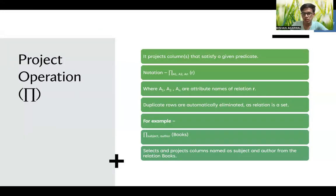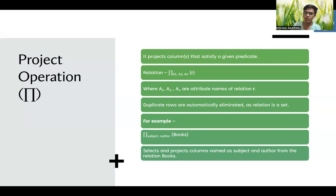Next is the project operation, denoted by pi (π). It projects columns that satisfy a given predicate. The notation is π_{a1, a2, ..., an}(r), where a1, a2, etc. are the attribute names of relation r — the column names you want to project. Duplicate rows are automatically eliminated since a relation is a set. For example, π_{subject, author}(books) selects the subject and author columns from the books relation, removing any duplicate rows.